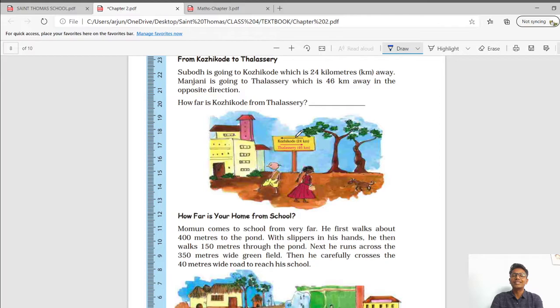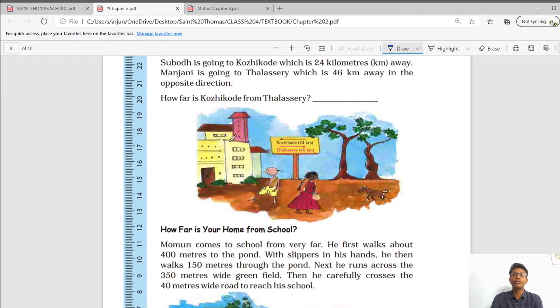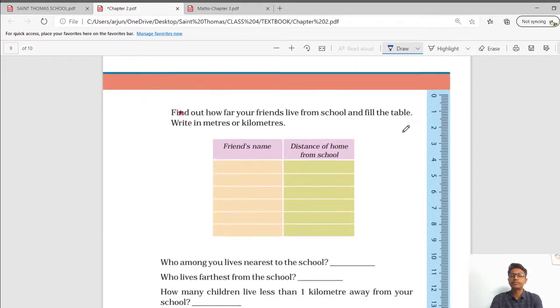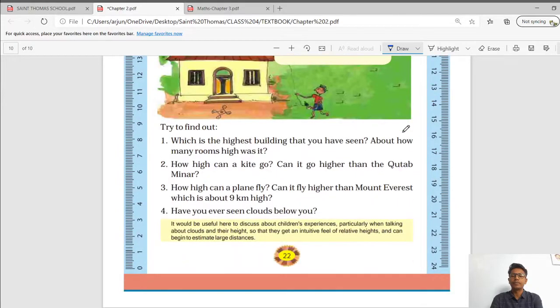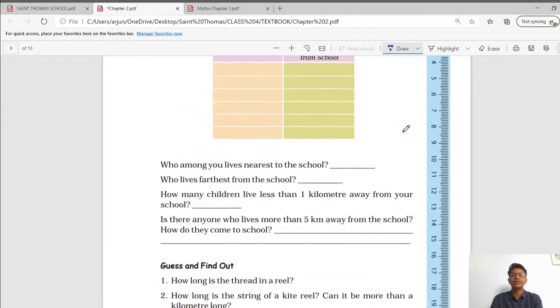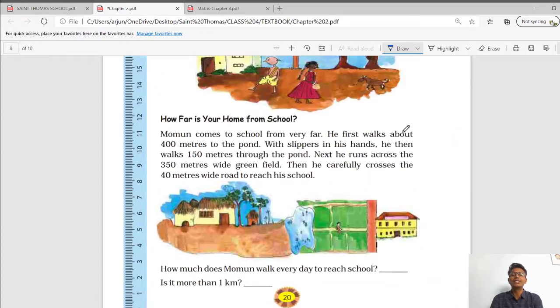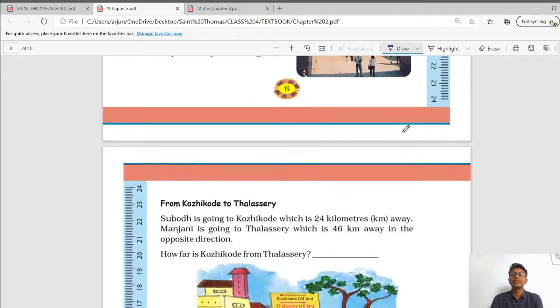The field was very far from his home. He chose a park nearby. The boundary of the park was about 400 meters long. How many round of the park must Devi Prasad run to complete 2 kilometers? This type of question can also be asked. You can see the answer and the method in the PDF file. This type of question can be asked. This is of from this distance. Koji Kode is of about 24 and from this point, Thalaseri is of about 46 kilometers.